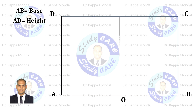Now divide the rectangle into two equal parts. Then divide AO into multiple equal parts and give point names 1, 2, 3. Similarly, divide AD with the same number of equal parts and give names.